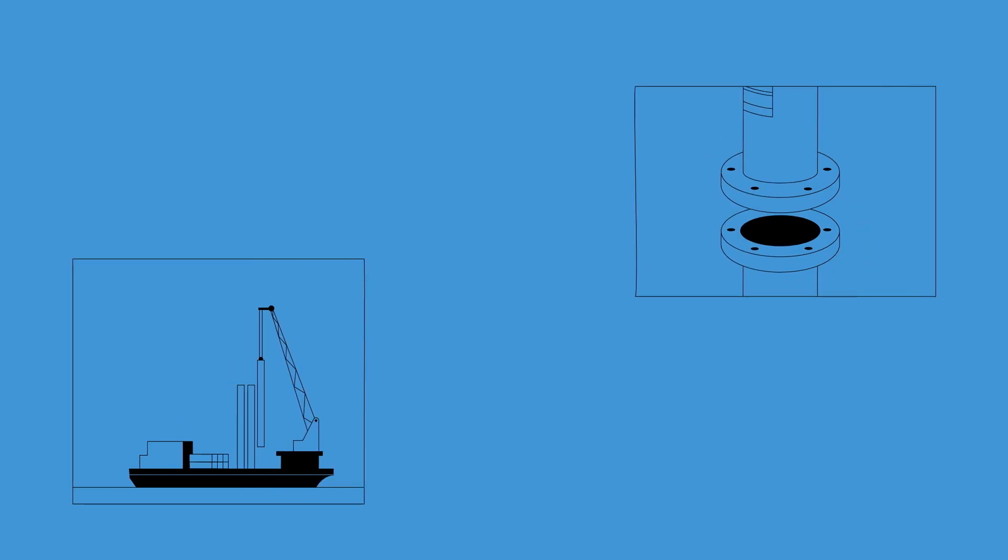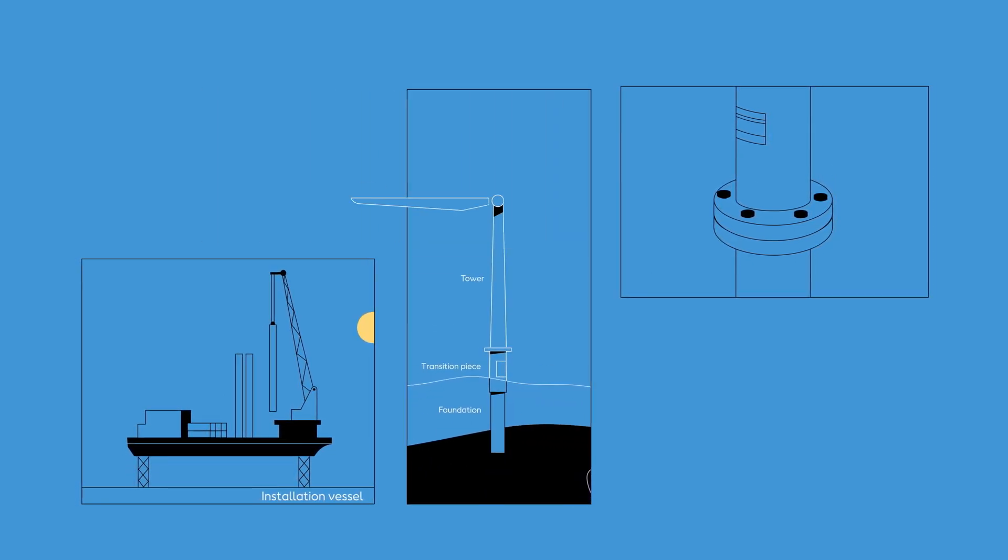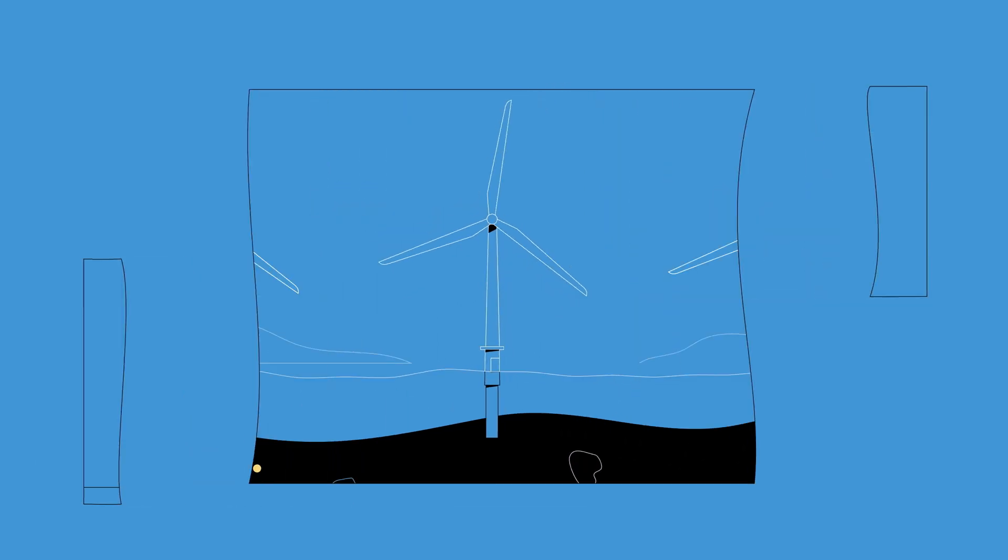An installation vessel carries the turbine components to the site and then uses a crane to lower each component onto the foundations. Once in place,